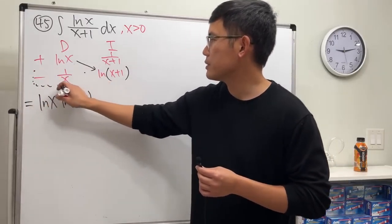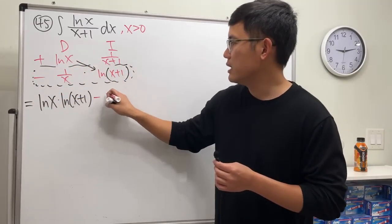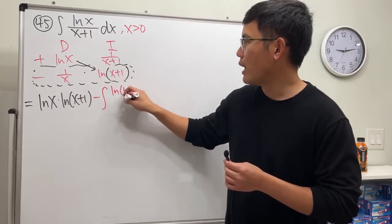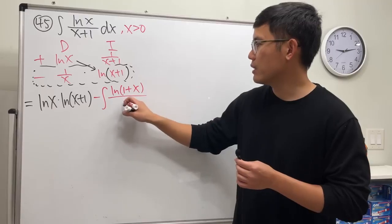multiply these two together. This right here gives us negative integral of ln(1+x)—let me write it down like this, you will see why—over x, like so.